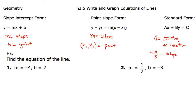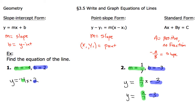Let's take a look at our first two examples where we have to find the equation of a line. We're given the slope and the y-intercept, so we simply write the equation in slope-intercept form. For example one, we'd have y equals negative 4x plus 2. For example two, we're also given slope and y-intercept, so there are two ways to write it: either y equals 1/7 x minus 3, or y equals x over 7 minus 3. Make sure your writing is clear so the x isn't mistaken for being in the denominator.